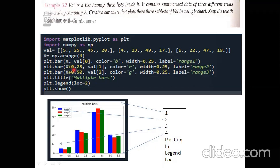The second bar is placed at x plus 0.25 with values at index one, its color, and label passed accordingly. For the third bar, it goes at x plus 0.50 because both previous bars each have width 0.25, totaling 0.50. The third bar uses values at index two, color green, and its label. Then we add a legend and show the plot.